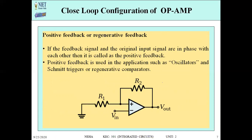The first type is positive feedback, also known as regenerative feedback. When the feedback from the output is connected to the non-inverting terminal — which is the positive terminal — that feedback is known as positive or regenerative feedback. If the feedback signal and the original input signal are in phase, then it is positive feedback. This happens when the feedback is connected to the non-inverting terminal.